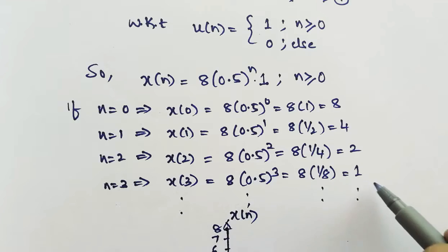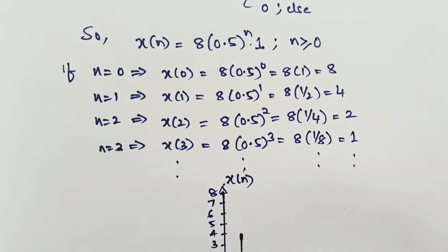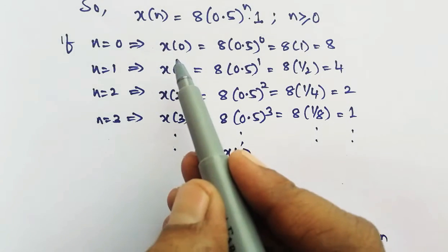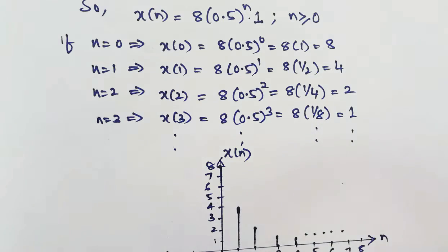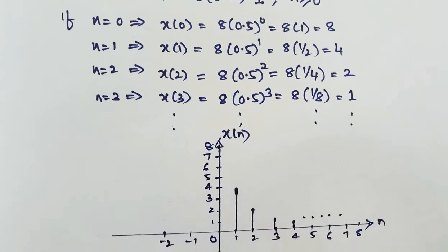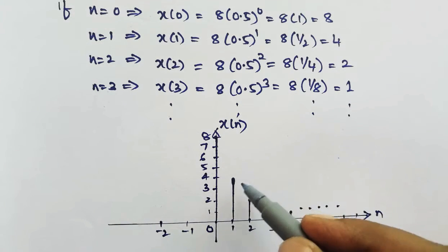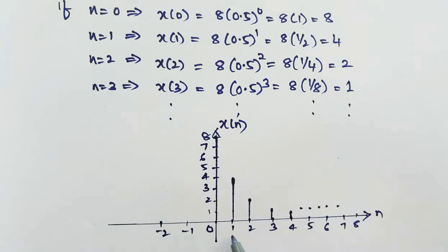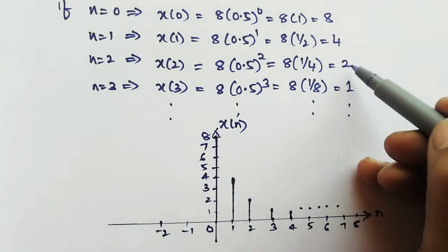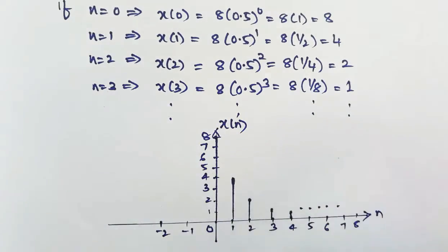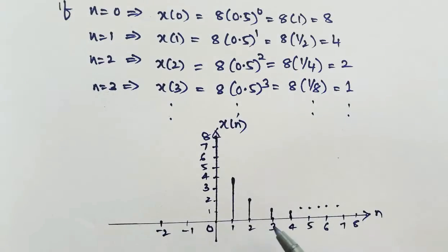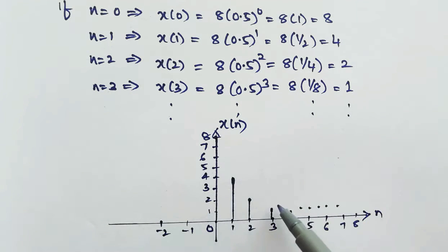For n equal to 2: x of 2 equals 8 multiplied by 0.5 to the power 2, which is 1 by 4, so 8 by 4 gives 2. Similarly, for n equal to 3 we are getting 1, and it goes on. Let us sketch the given signal x of n with these amplitude values.